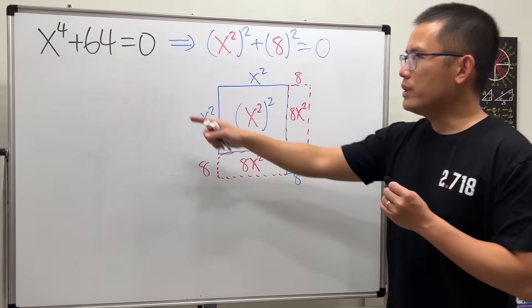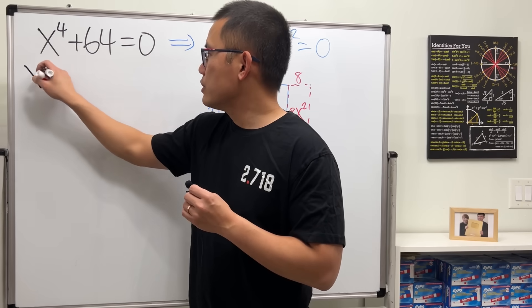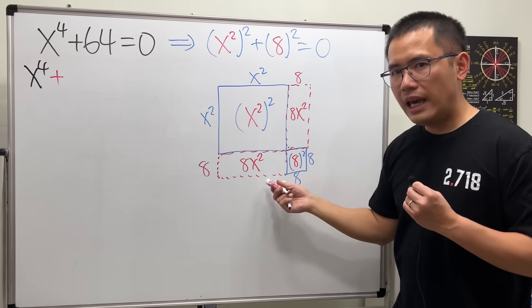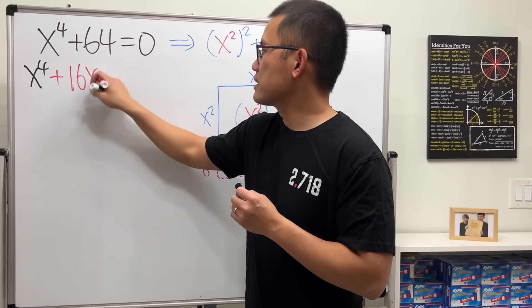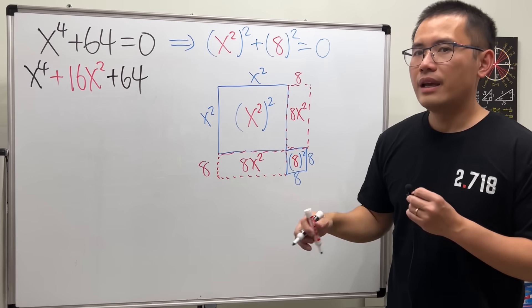So, we can actually complete a square. If you look at that, and then just go ahead and add 2 of the 8x squares. So, it's 16x squared.